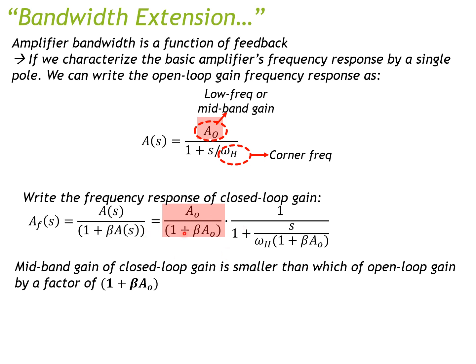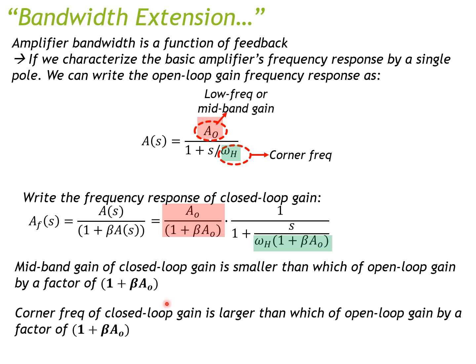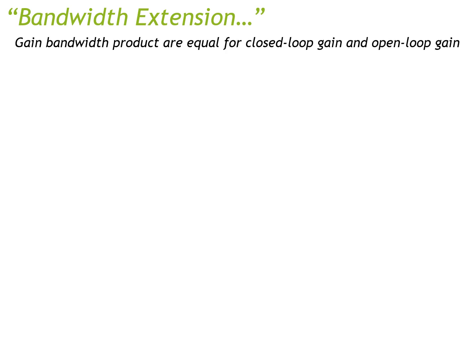Now looking at the corner frequency: the original open loop corner frequency is ωH, but the new closed loop corner frequency is ωH multiplied by (1 + βA₀). So the corner frequency of the closed loop gain is larger by a factor of (1 + βA₀). However, if you compare the gain-bandwidth product — multiplying gain by bandwidth — the result for closed loop and open loop are actually equal.